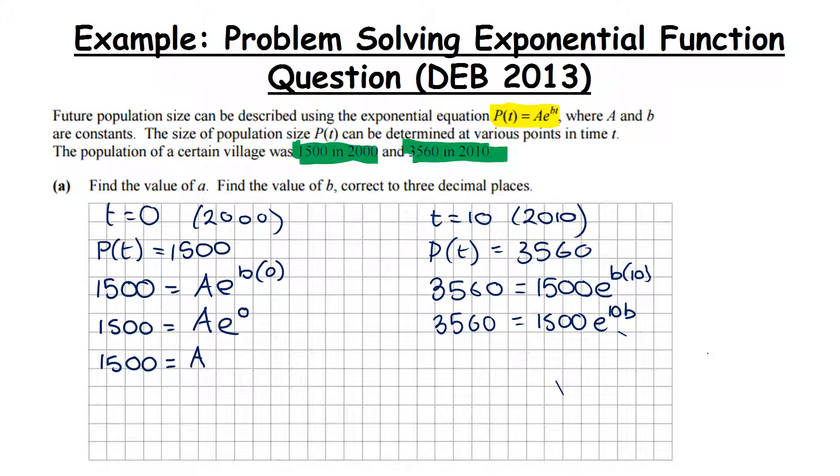Before I can use that, I need the E to be on its own. At the moment there is a coefficient, there's a 1500. So to get rid of that, I'm going to divide both sides by 1500. And what happens is these two cancel, and we're left with - I'm just going to flip this around for ease - E to the power of 10B is equal to 3560 over 1500. Now my advice would be at this point not to turn that into a decimal. Let's keep it as accurate as possible. And we can now convert our index into a log. Now I'm going to use the circle method.